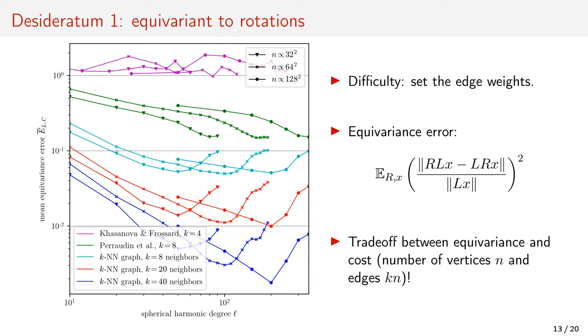Rotation equivariance can be improved by adding edges to the graph. Of course, there is no free lunch. In the limit, the graph is fully connected and the computational cost is the same as the spherical harmonic transform. In between, there is a trade-off between equivariance and computational cost controlled by the number of neighbors.